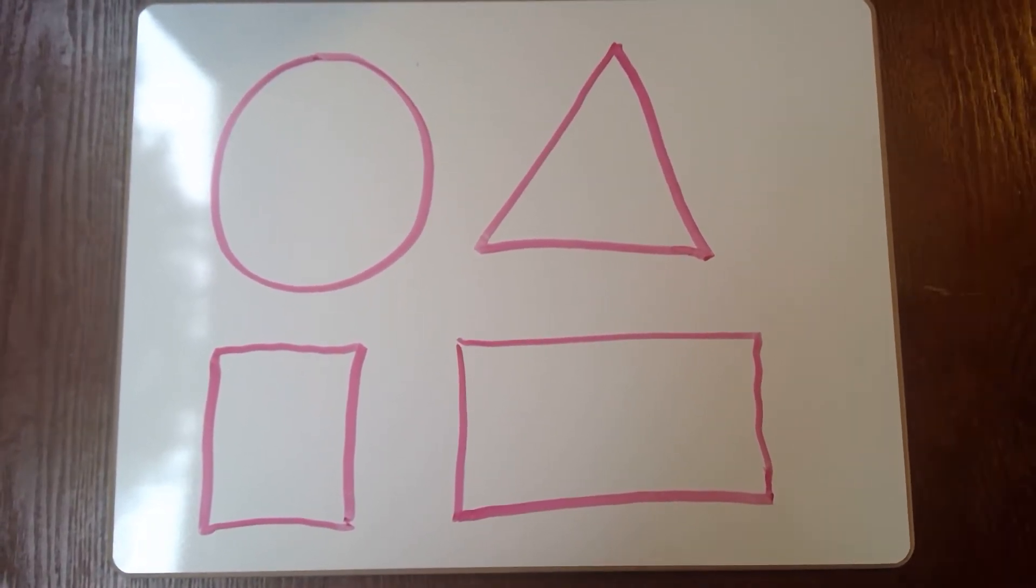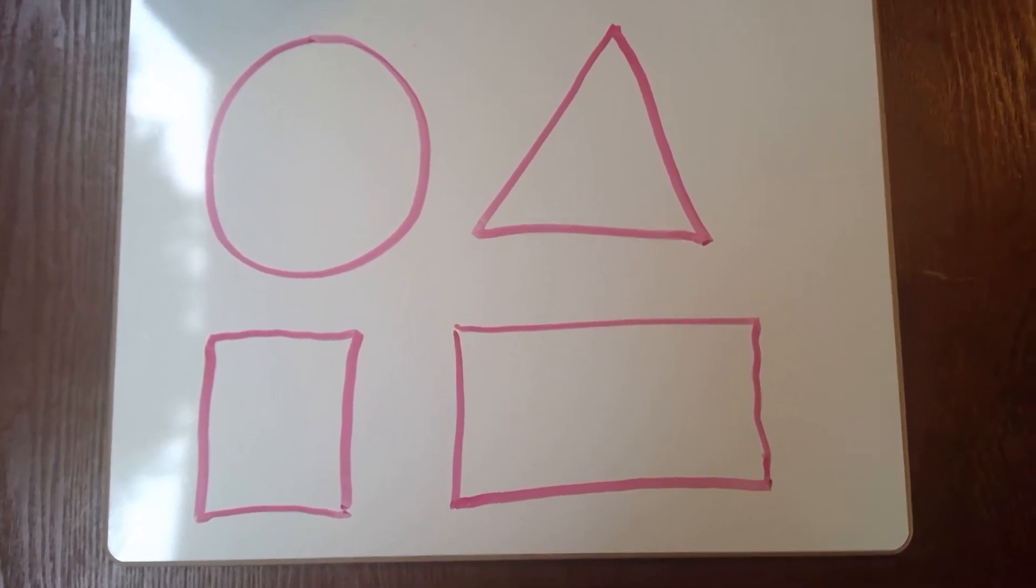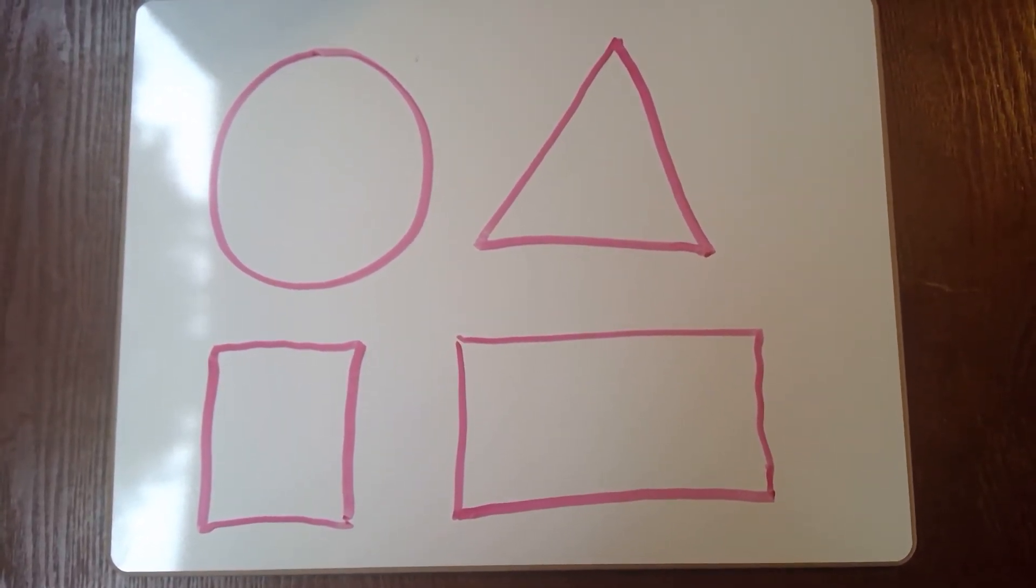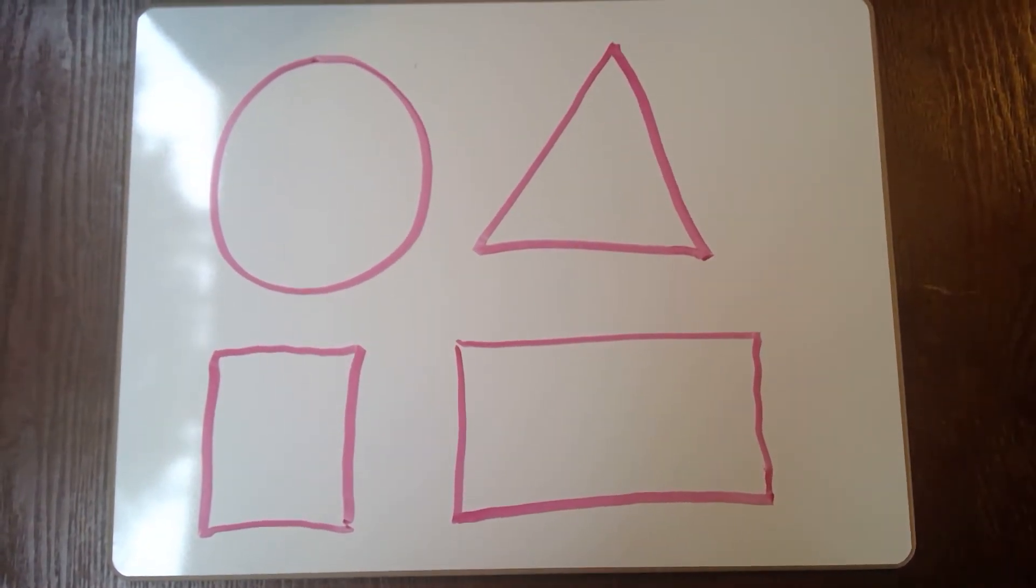When you talk about the square and the rectangle, you can talk about how they both have four sides, but make sure to point out that the rectangle has two sides that are longer while the square has four sides that are equal.